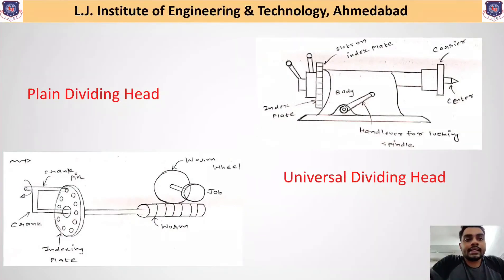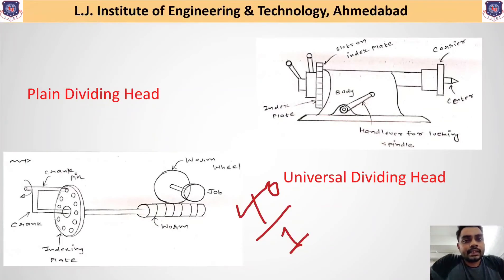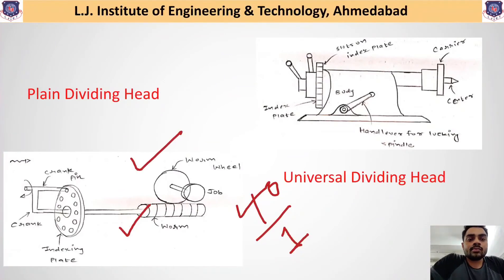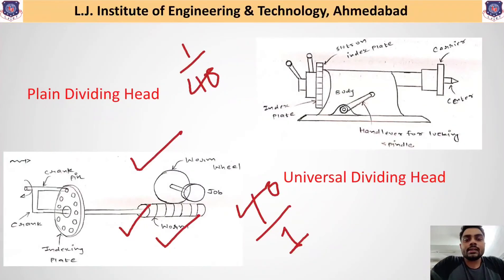The most important point for the universal dividing head is that the worm and worm wheel have a gear ratio of 40:1. This means if the worm completes 40 full rotations, it results in one complete rotation of the worm wheel — that is, 40 revolutions of the worm produce 1/40 revolution of the worm wheel. This change in speed helps obtain different numbers of divisions on the workpiece, which we will calculate in our next topics.